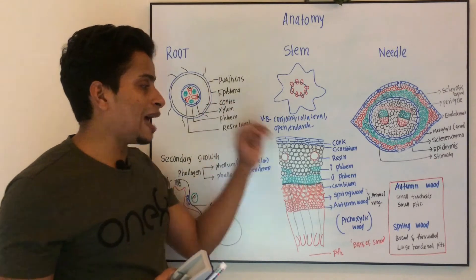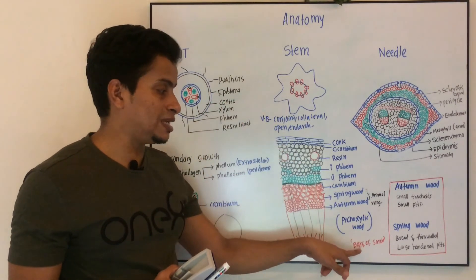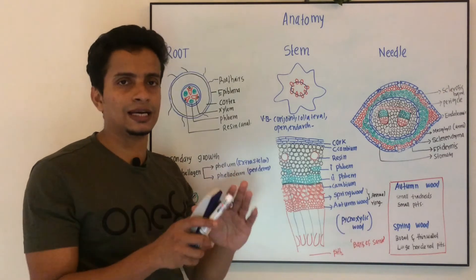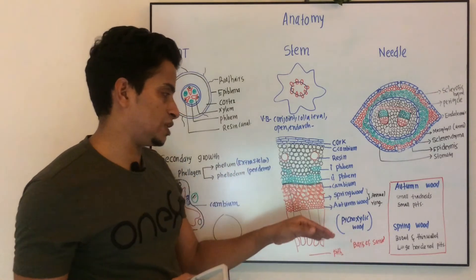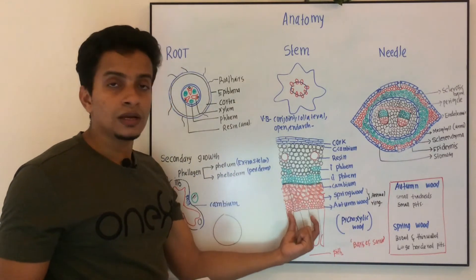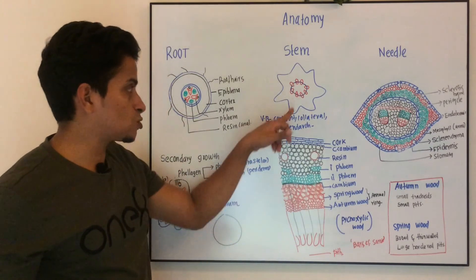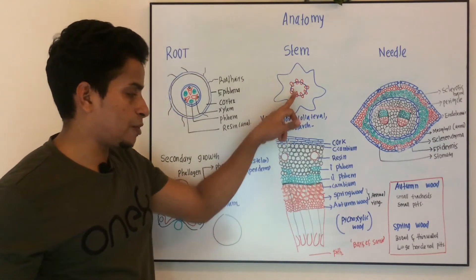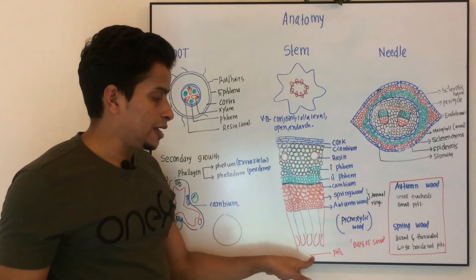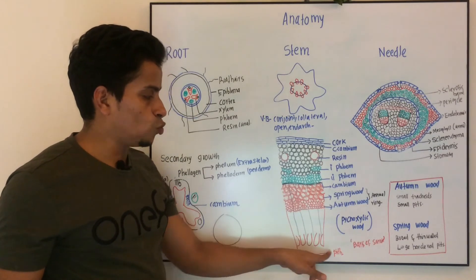One more peculiarity is that you can see bars of Sanio. In between the medullary rays, these bars of Sanio can be found.